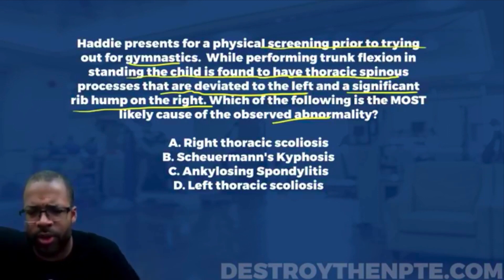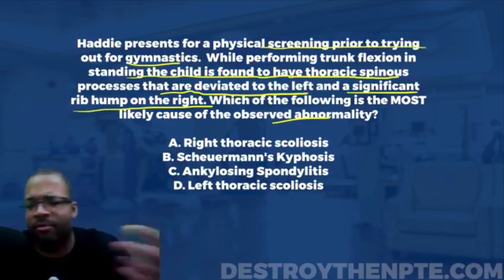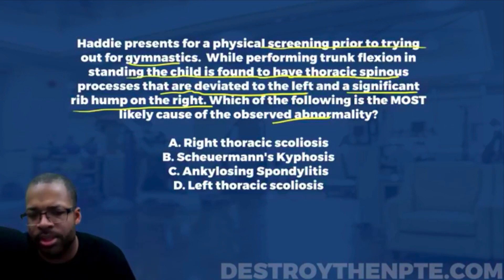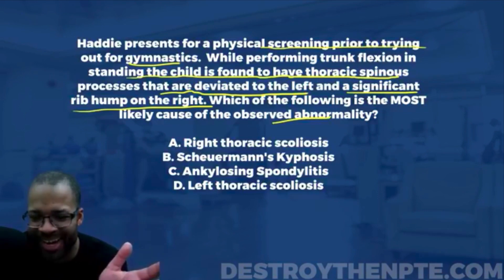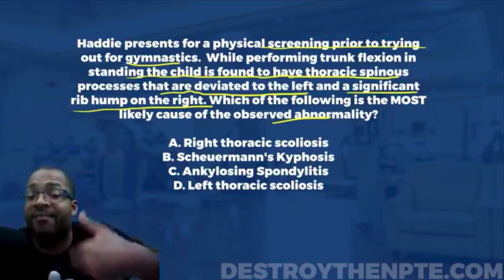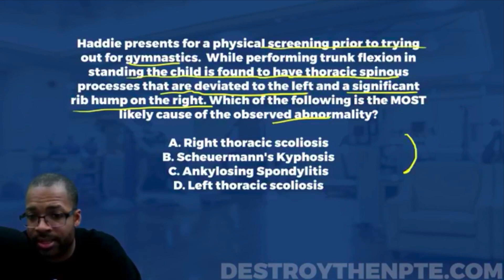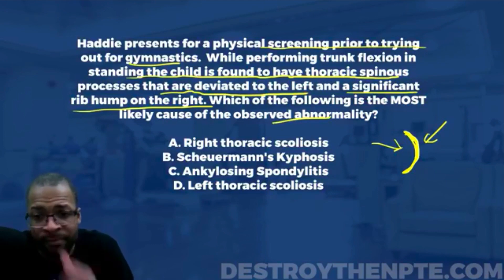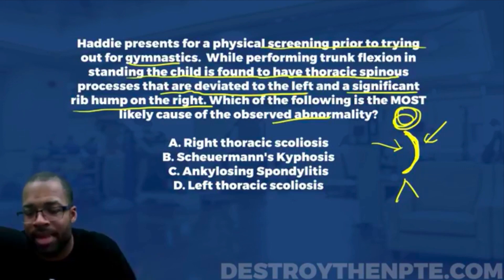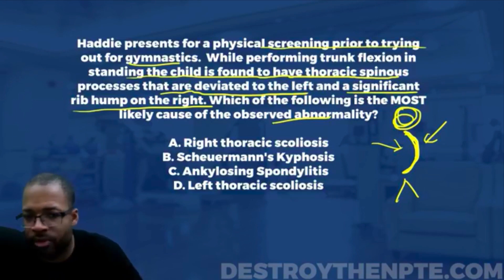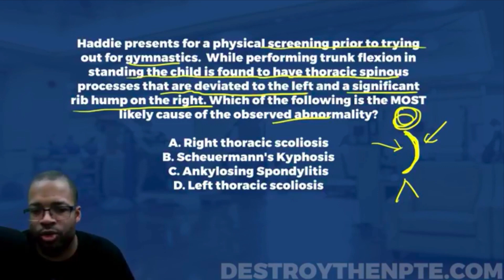Answer A is right thoracic scoliosis. For those unfamiliar, scoliosis is an abnormal lateral curvature of the spine — we can have left and right types. The important part is how we name scoliosis: we always name it by the side of the convexity. So if the convex side of the lateral curve is on the right, we call it right thoracic scoliosis.